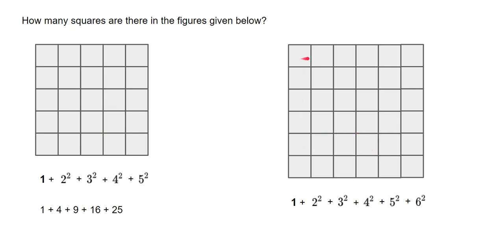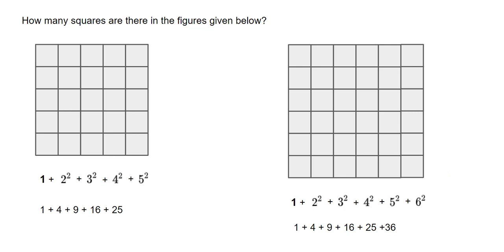And for this six by six perfect square, because it is six by six, the number of smaller squares is thirty-six. The number of two by two, three by three, four by four, and five by five squares are mapped out. Using the same formula — one plus two times two plus three times three plus four times four up to six — the total number of squares here is ninety-one.